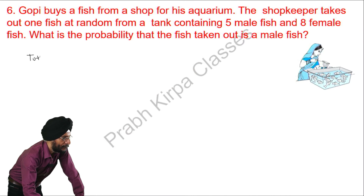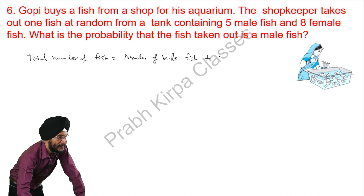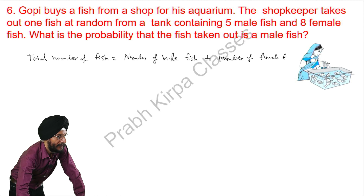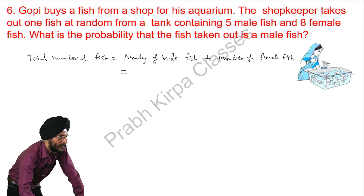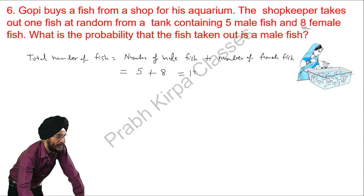The total number of fish is equal to the number of male fish plus the number of female fish. The total number of male fish given in the question are 5, and the number of female fish are 8. So the total number of fish is 13.